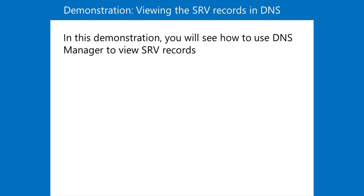Spend as much time examining the SRV records in DNS as is appropriate based on your experience or interest. After examining the subdomains that start with an underscore, learn that domain controllers register several SRV records so that you can search them in multiple ways. Look for an SRV record in _tcp.Default-First-Site-Name._sites.datum.com that is offering the Kerberos authentication service.